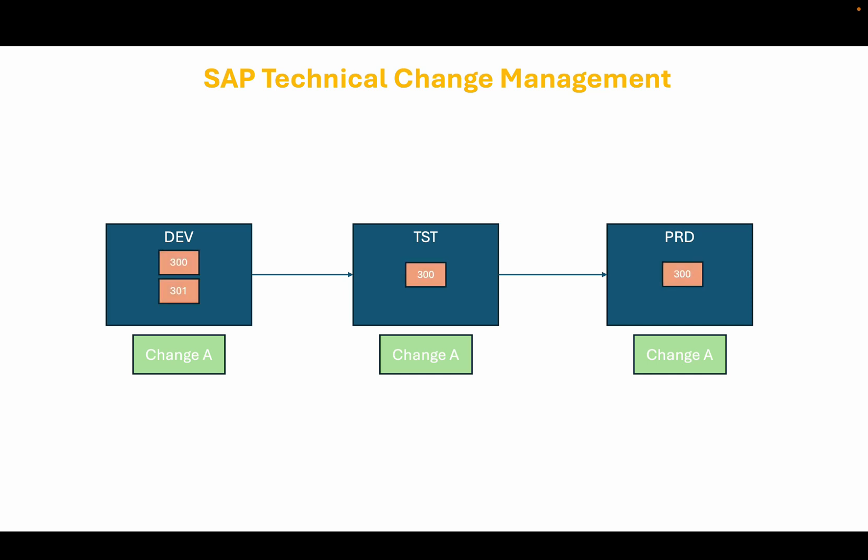There can be multiple clients available within the same SAP system as well, which can be used for various purposes. For example, client 300 in the development system can be used as a development client where the changes are created, and client 301 within the development system can be used as a unit test client.